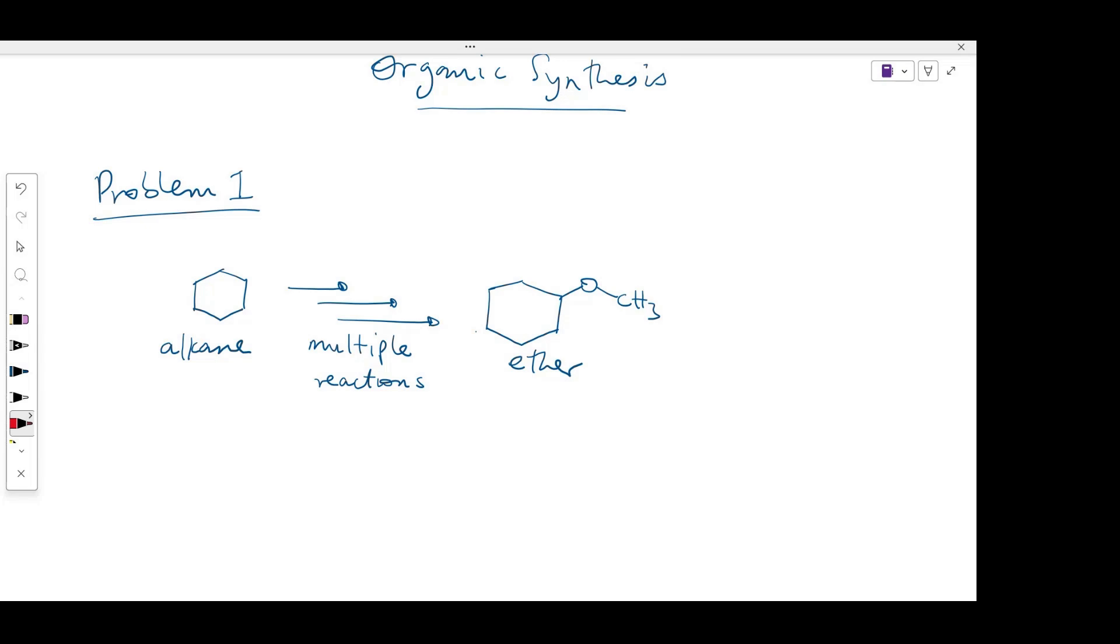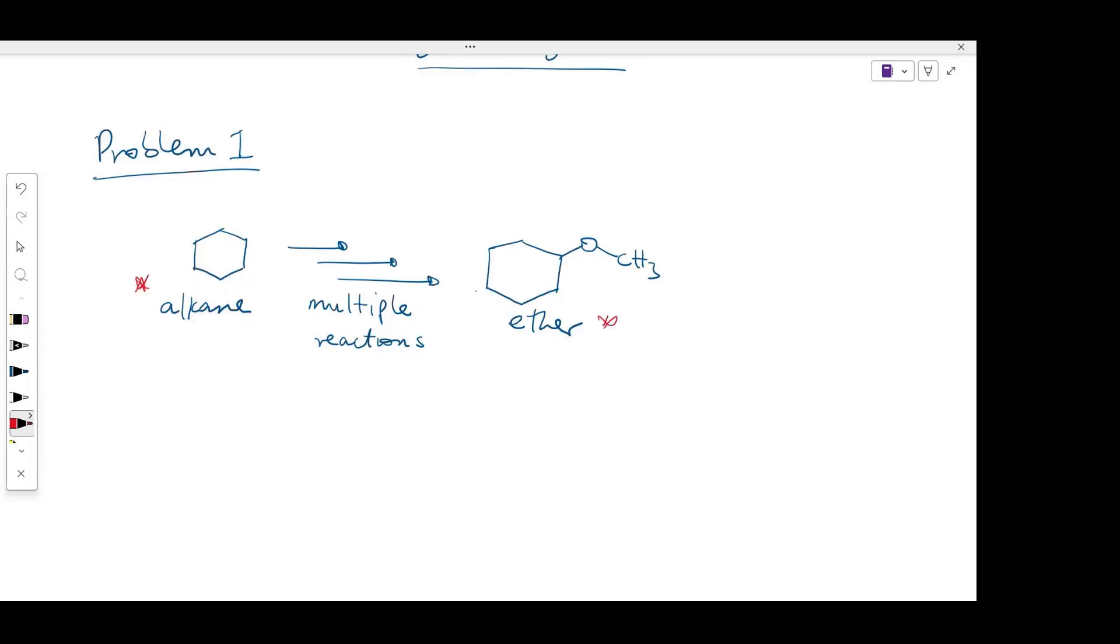Retrosynthesis is working backwards. Looking at our starting material, you will notice that this is also this component. So the new thing that is added here is the OCH3 group. I want to find a way to disconnect my product into simpler components or fragments.